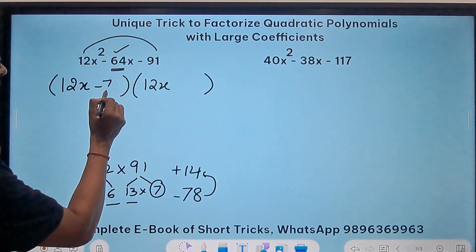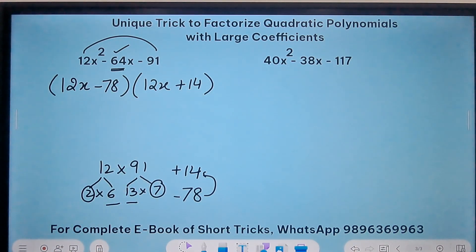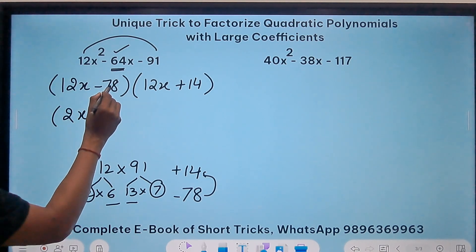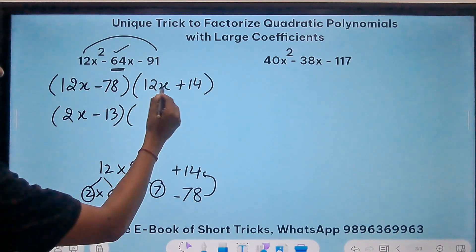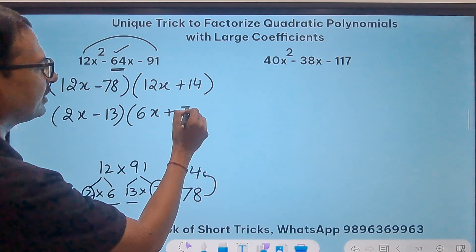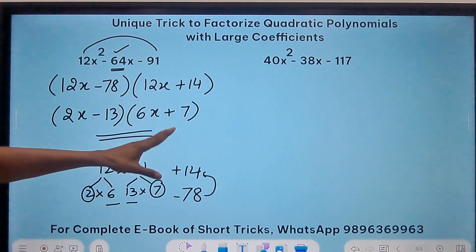So negative 78 and plus 14, and now remove the highest common factor. 12 and 78, I think they are divisible by 6. So 6 times 2 is 12 and 6 times 13 is 78. Here we have 2 as a common factor. So 6x and then plus 7, and here we go. The factors of this huge quadratic polynomial are 2x minus 13 and 6x plus 7.